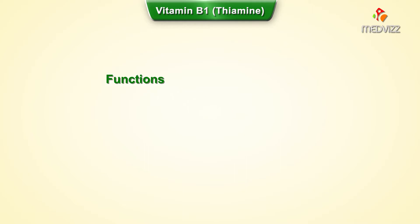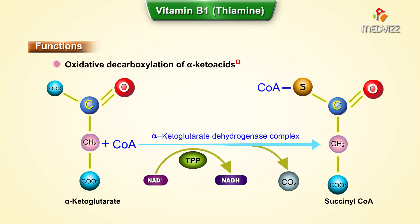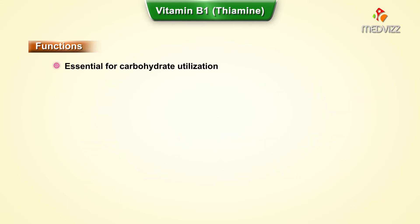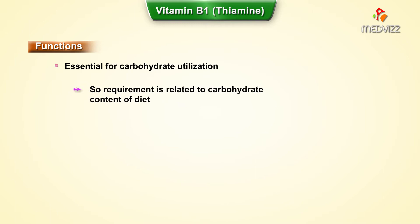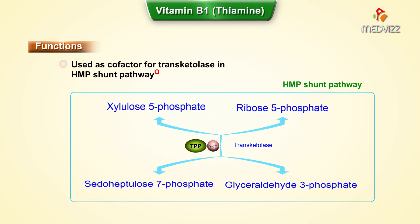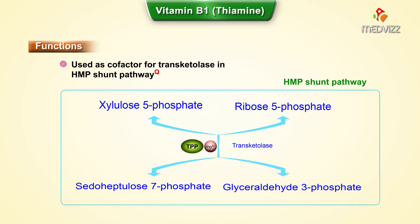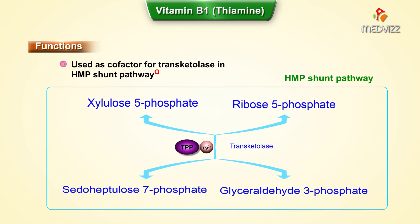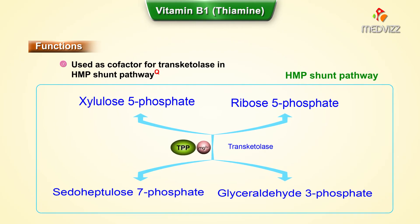Vitamin B1 is important for oxidative decarboxylation of keto acids, where it acts as a cofactor called thiamine pyrophosphate (TPP). It is extremely essential for carbohydrate utilization, with approximately 0.5 milligrams required per thousand calories in the diet. TPP also acts as a cofactor for transketolase in the HMP pathway.